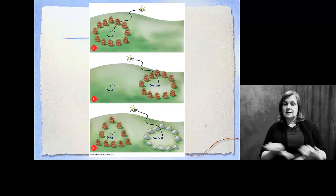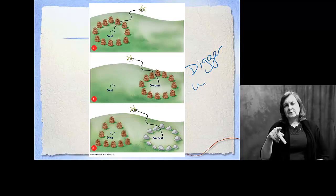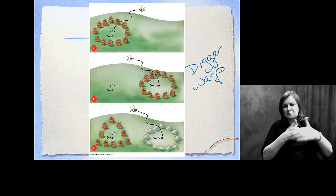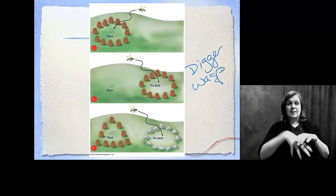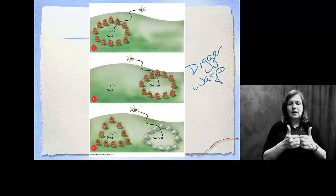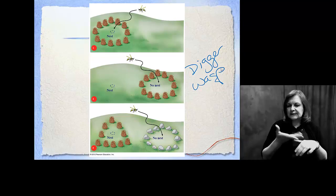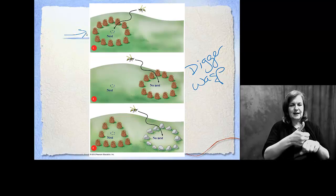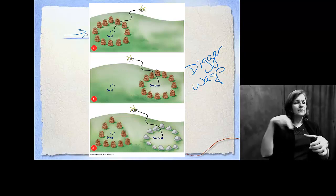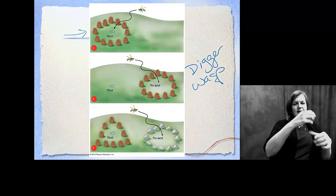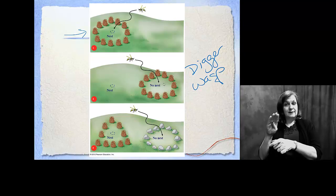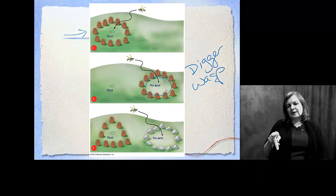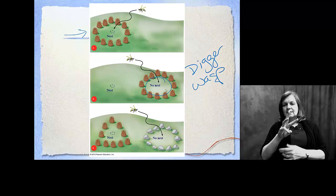Many studies have been done on the digger wasp, trying to understand how they find their particular nesting site since they nest below ground. How do they find their way back after being out during the day? The idea is they orient themselves to that particular landscape. Scientists set up these cone-shaped bush-like objects surrounding the nest. When the wasp left the nest, they moved those objects to the other side where there was no nest. The bee automatically came back to the location marked by those landscape features — demonstrating that they really are orienting based on things in the environment.